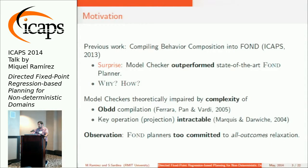So the question we were really puzzled about was why and how. Because model checkers are theoretically impaired by the complexity first of the OBD compilation, and this paper by Bardi goes to great depth to discuss how hopeless that can be. Also, the key operation used by symbolic model checkers — projection — is intractable for OBDs.